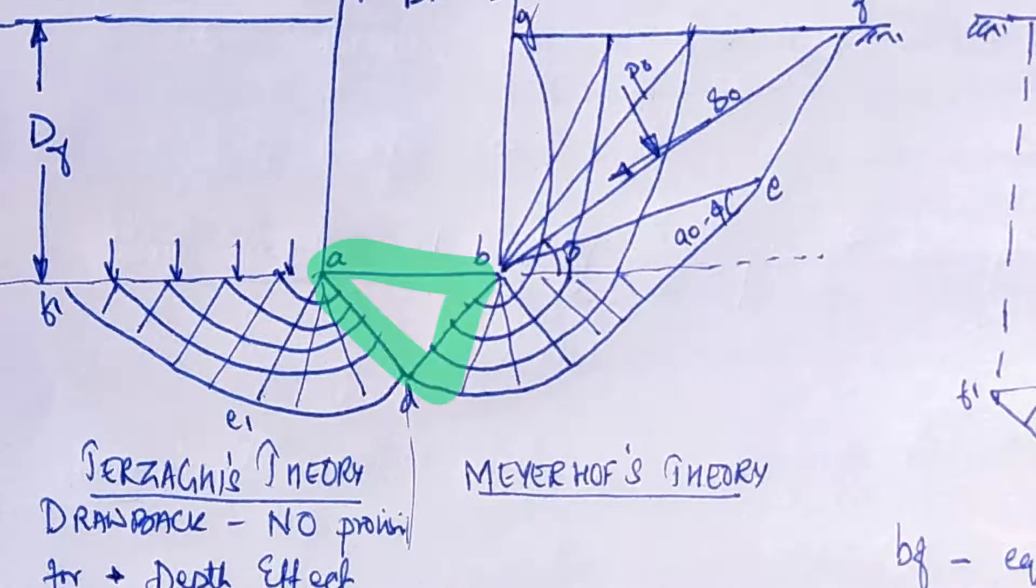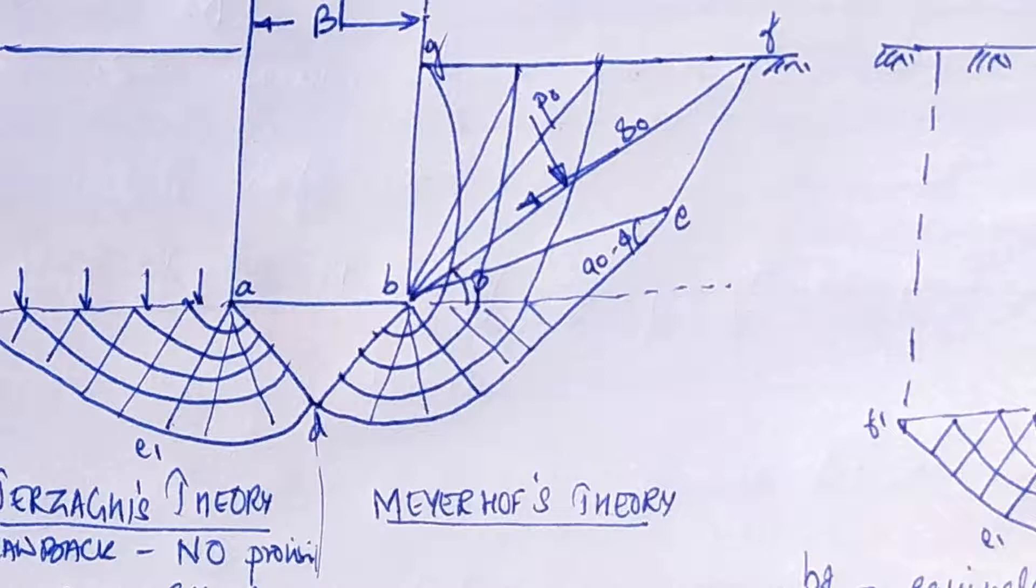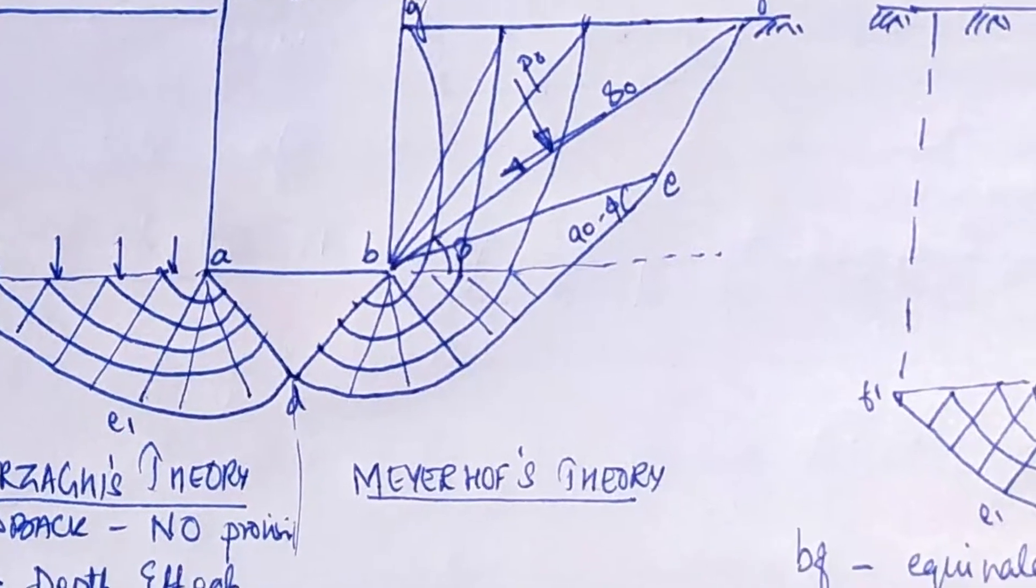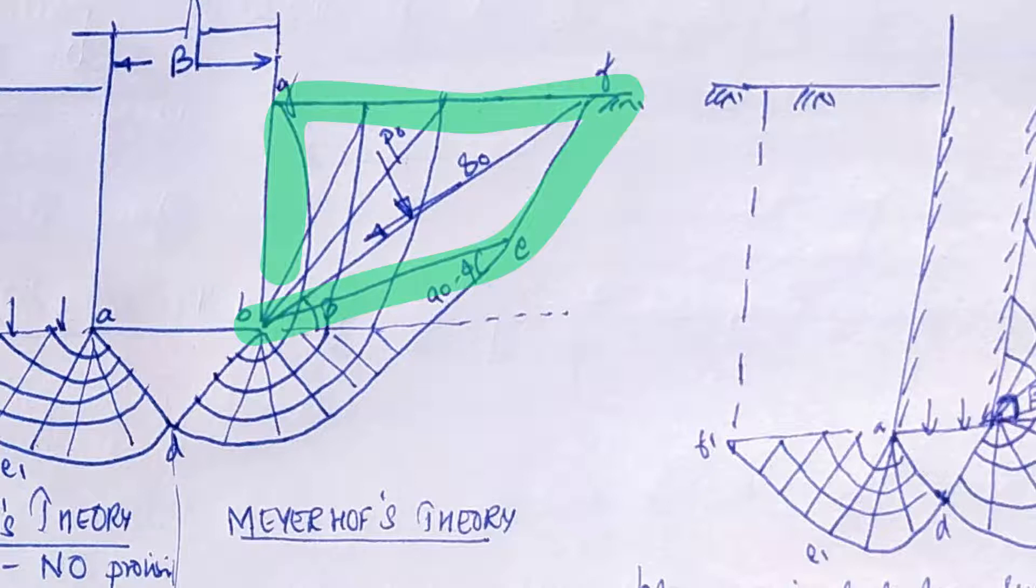In Meyerhof's theory the radial shear zone extends up to BDE, while in Terzaghi the radial shear zone extended up to only this much. Meyerhof assumed this zone BEFG is the zone of mixed shear in which shear varies between radial and plane shear depending largely upon the depth and roughness of the foundation.